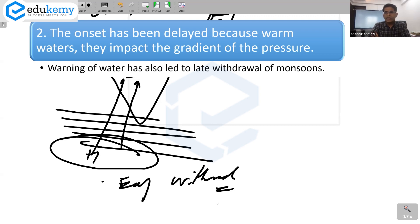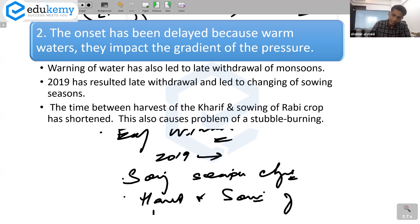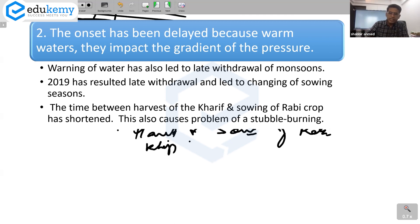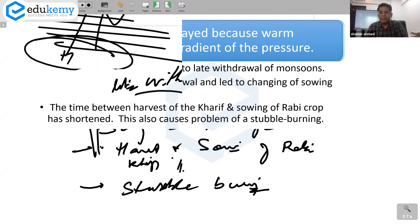Warming of water has also resulted in early withdrawal. 2019 witnessed late withdrawal. The IMD also says the onset dates are now changing. 2019 has resulted in late withdrawal. So late withdrawal problem is that your sowing seasons change. The time between harvest of the kharif crop and the sowing of the rabi crop has shortened. All of this also impacts your agriculture. It was late withdrawal. And this also causes problem of stubble burning. They have to get the fields ready very fast. That's why they resorted to very fast stubble burning.